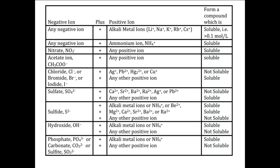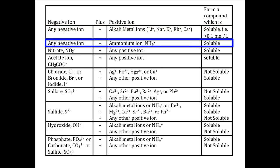Now let's take a look at the rows. The first row has any negative ion in the first column, a single plus in the second, alkali metal ions and a list of what those ions are in the third column, and soluble, with the definition of soluble, in the fourth column. This means that any common compound of any of the listed alkali metal ions is soluble. The second row is similar but with ammonium ion. The third and fourth rows have a specific negative ion listed with any positive ion in the third column. These last two mean, for example, that any compound of nitrate ion is soluble.